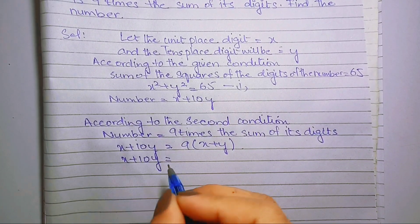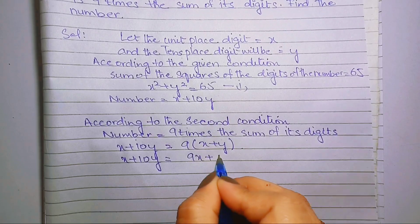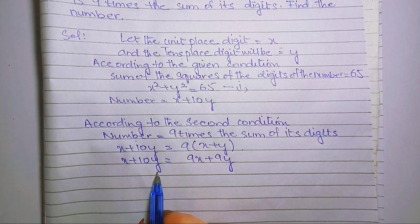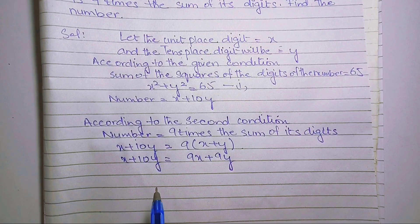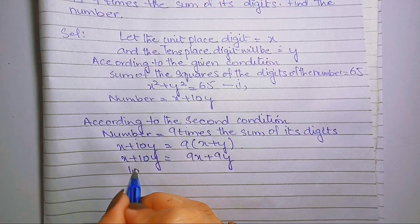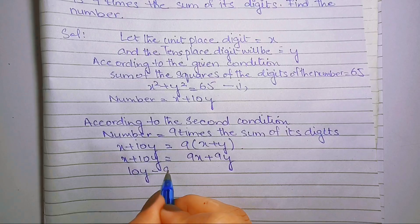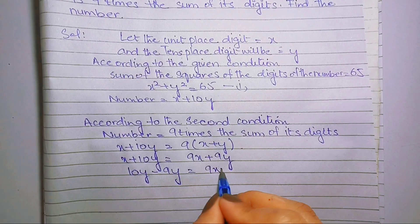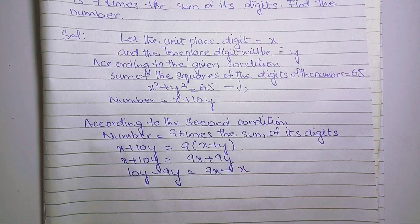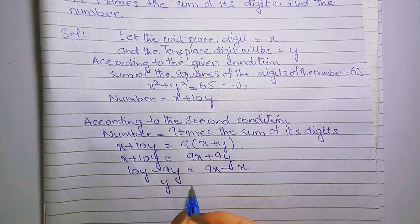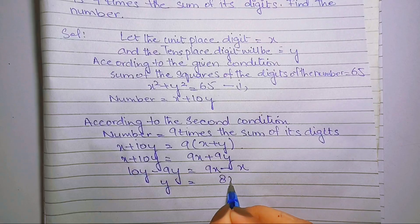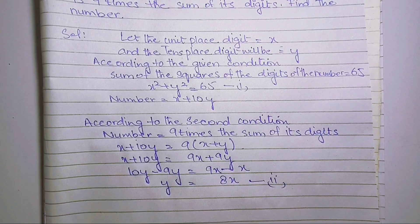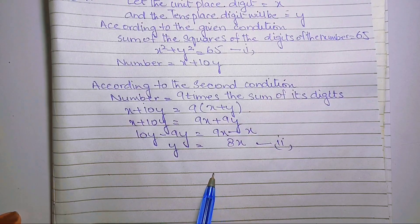x plus 10y equals to 9x plus 9y। अब y की values एक तरफ और x की value एक तरफ करते हैं — 10y minus 9y और 9x minus x — तो यहाँ पर y equals to 8x आजाएगा। इसको equation number 2 का नाम देते हैं।